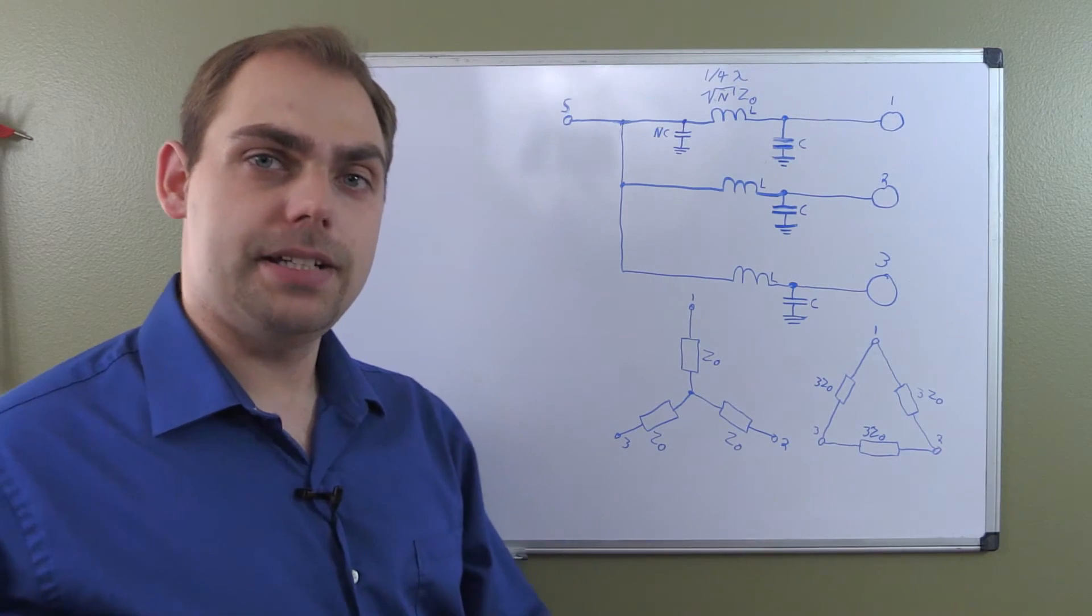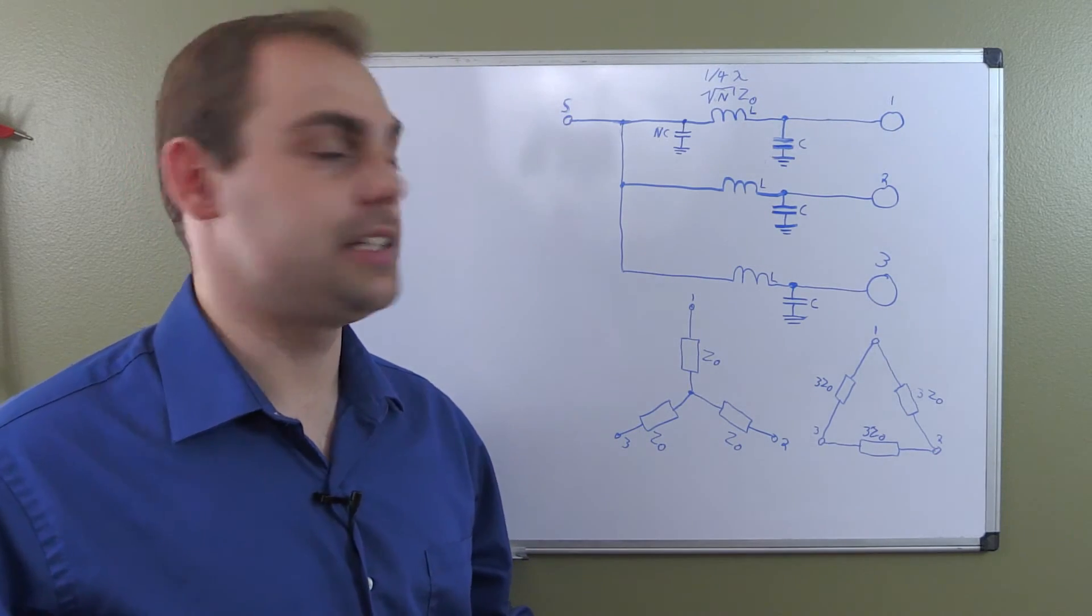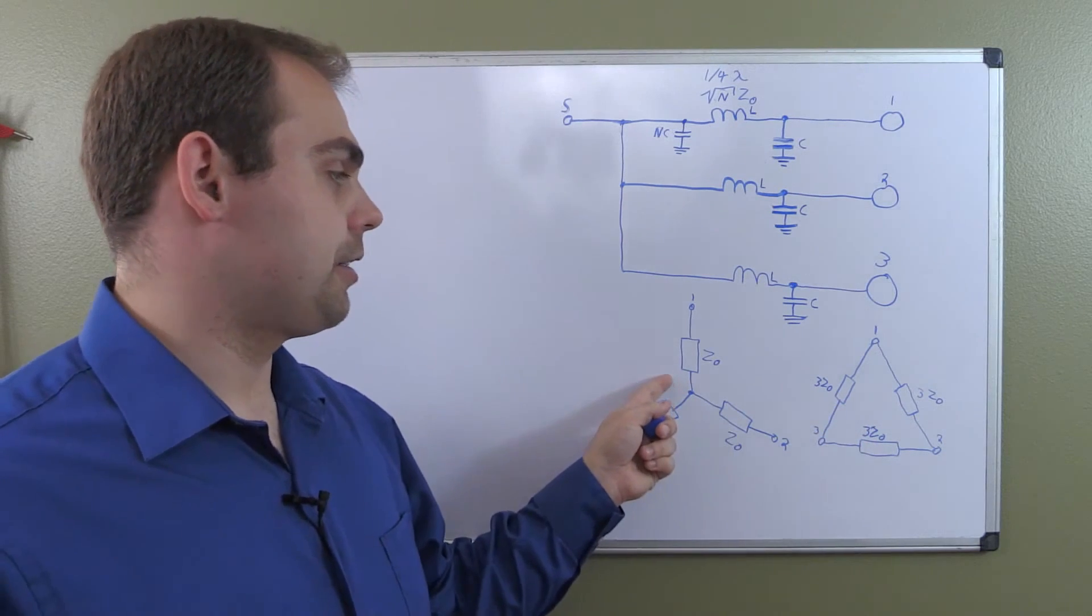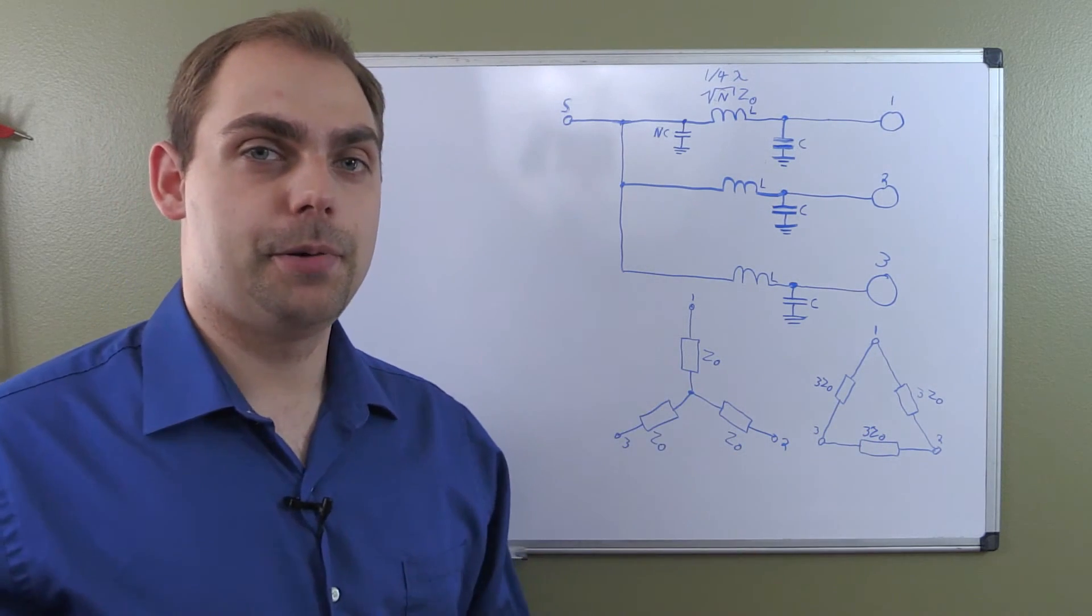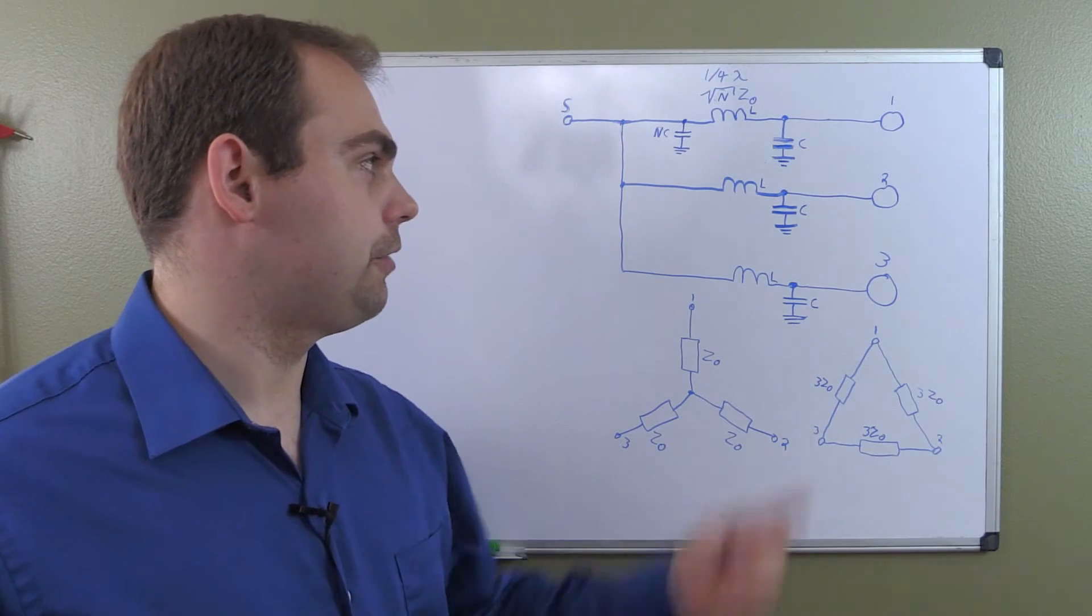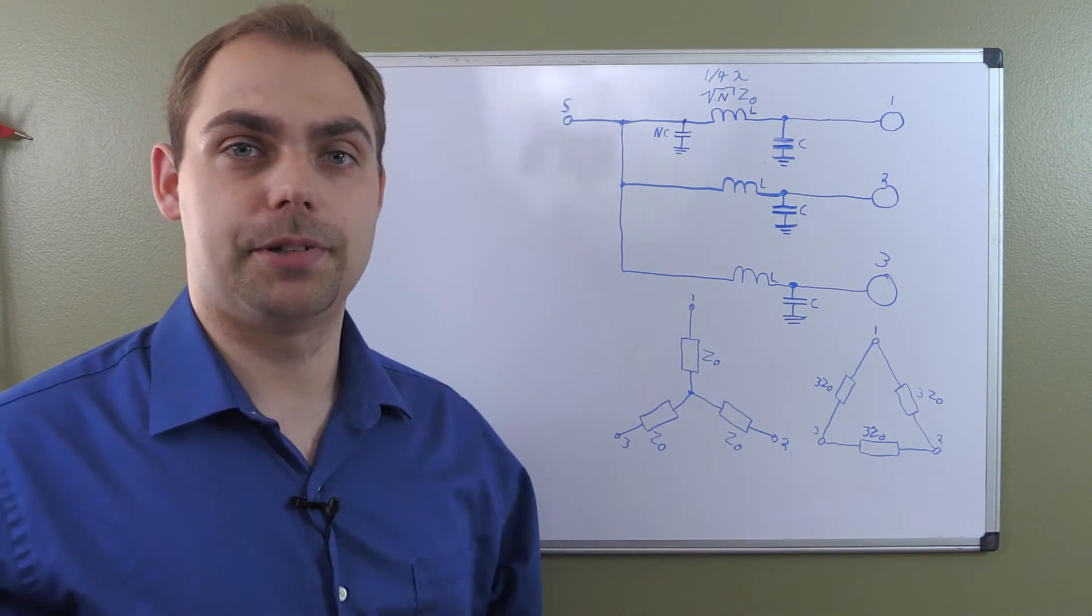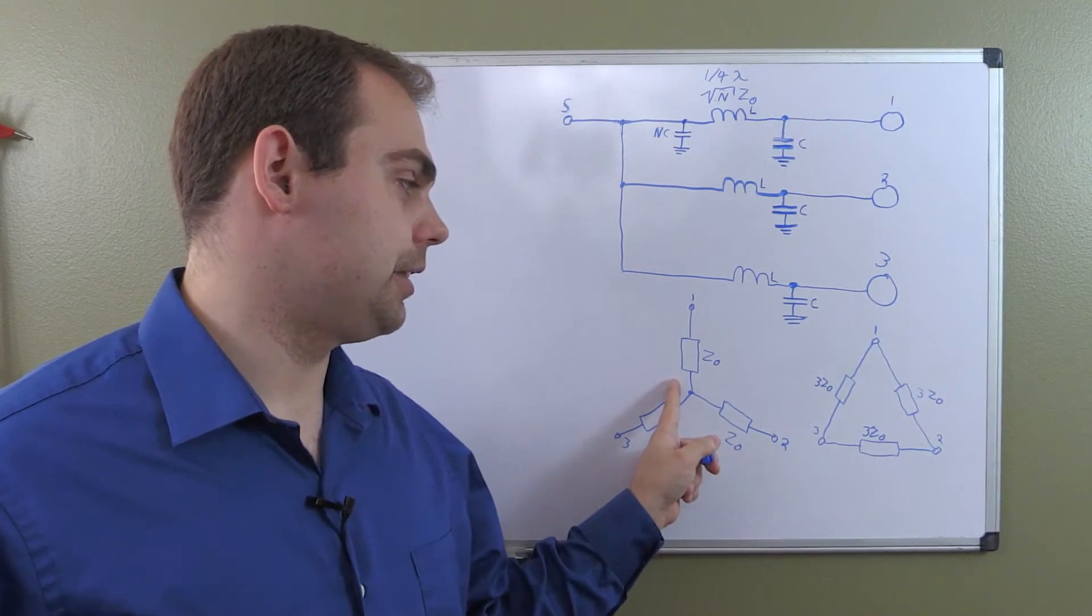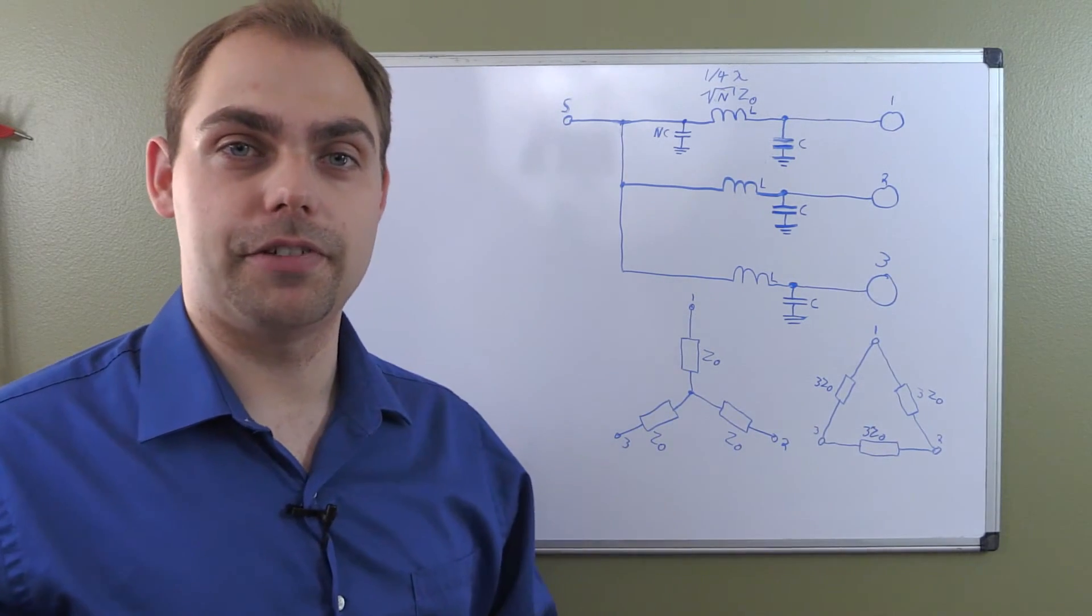Now, the resistors. There's two ways, at least for the three-way splitter. You can do this in a delta configuration or in a star configuration. And I just want to mention them both, but in reality, for the three-way, you can use either. But once you go higher in numbers, you want to use the star configuration because, obviously, it's not a delta anymore if you use more than three legs.